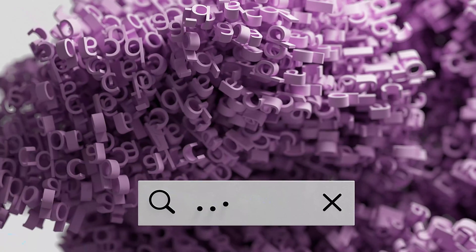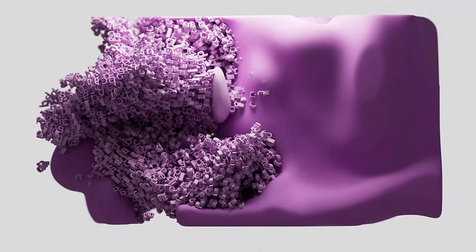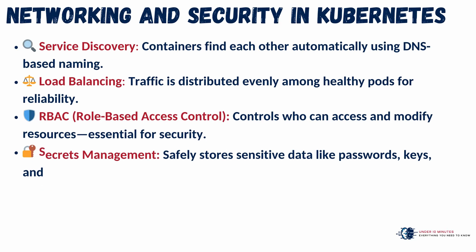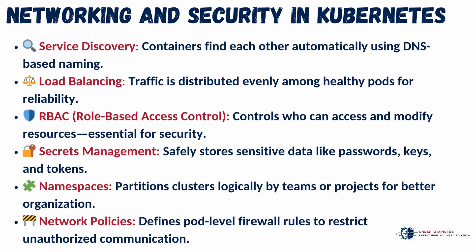Suddenly, complex container operations became automated, resilient, and reliable. Kubernetes not only orchestrates containers, it also weaves them together with robust networking and security. Applications inside the cluster communicate effortlessly with DNS-based service discovery and built-in load balancing, ensuring high availability. Security is enforced with role-based access control, managing exactly who and what can access cloud-based cluster resources.